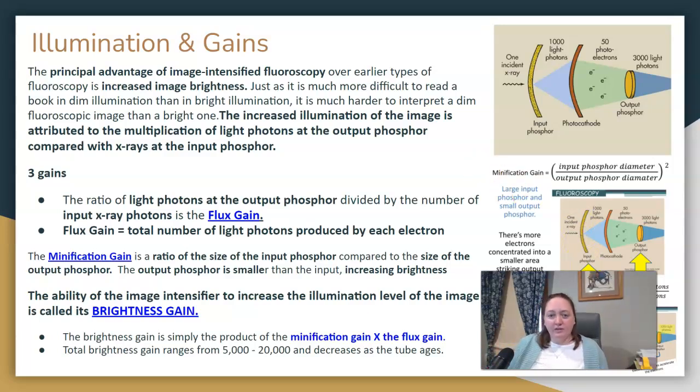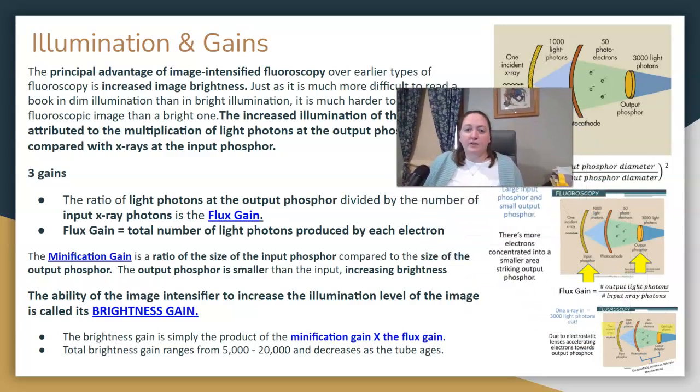And then these two calculations will help us find something that's called brightness gain. Brightness gain, we are simply going to multiply what we got for minification gain and what we got for flux gain. The total brightness that we gain ranges from about 5,000 to 20,000. This will decrease as your tube ages.